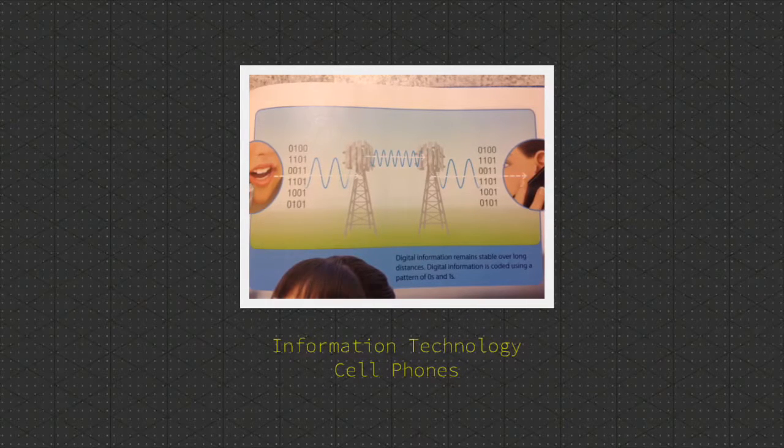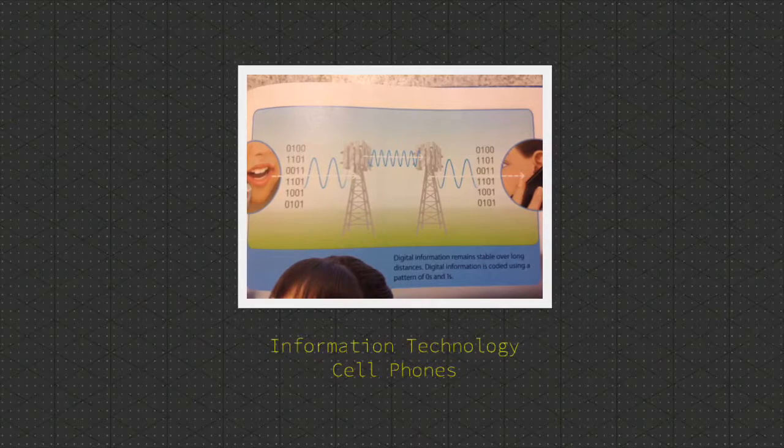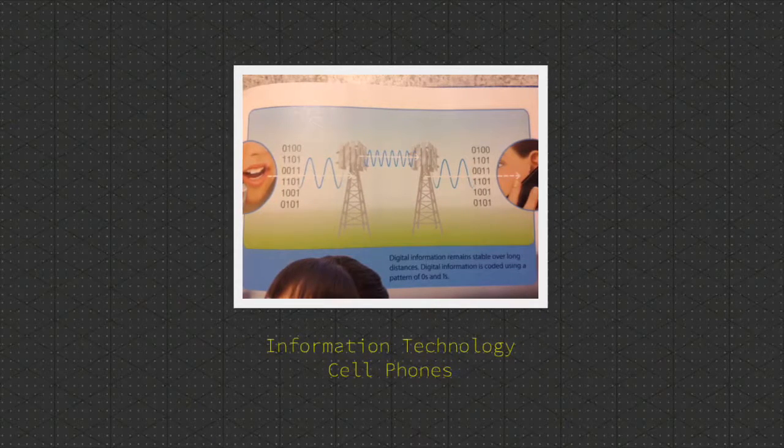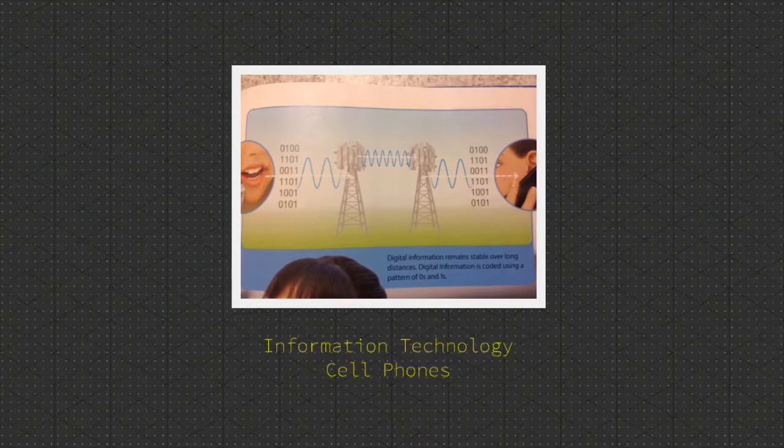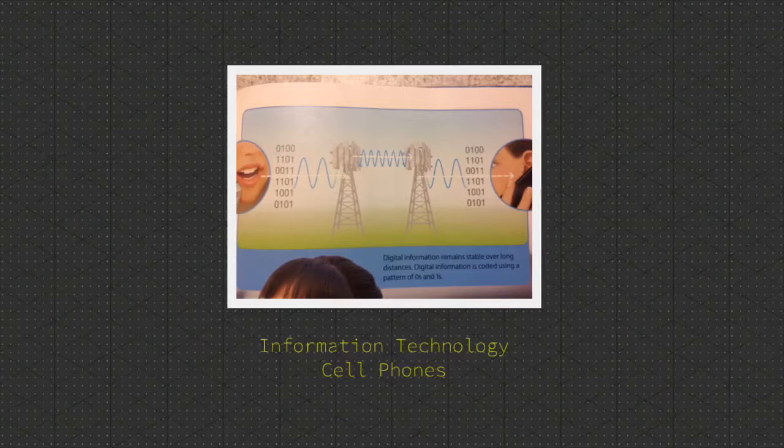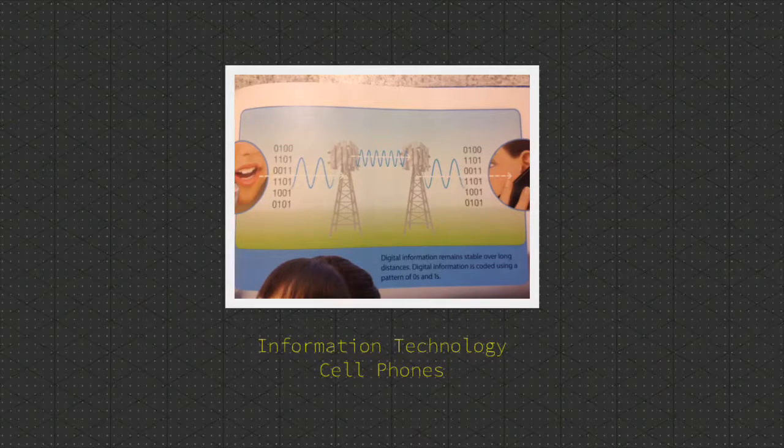When you talk into a cell phone, the phone converts the sound of your voice into digitized form before transmitting it to radio signal. The radio signal is picked up by the nearest cell phone tower in your network. The tower redirects the signal through the network to your friend's phone.